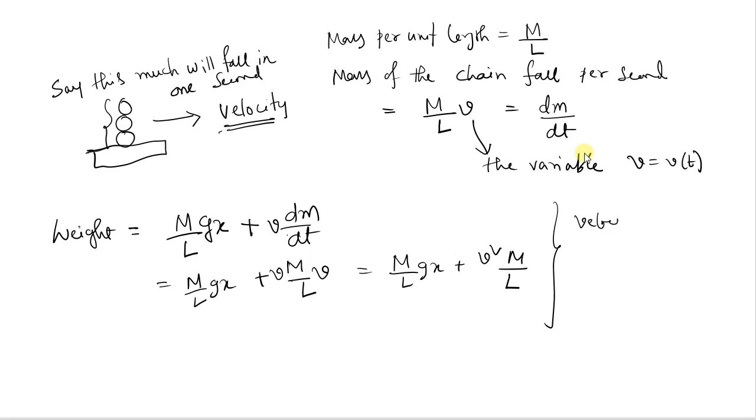Now what is v squared? This is conservation of energy - velocity at the time when x length has fallen. How will we determine it? By conservation of energy. Initially that much was the chain, right now this is the chain. The x length has already fallen here. The mass of chain falling is M by L times x.